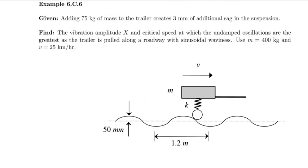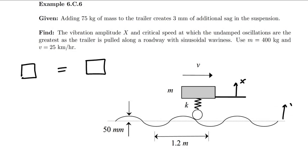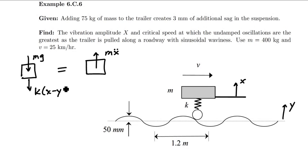We're going to solve this by starting with a free body diagram for this system. I need to define a couple of coordinates: x is the positive coordinate of the trailer, and y is the positive coordinate of the roadway. With that, the mass times acceleration upward of the trailer is mx double-dot, and the forces acting on it are mg acting downward, as well as a restoring force — assuming the trailer maintains contact with the ground — of k times the quantity (x minus y).